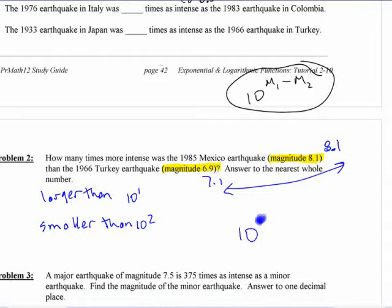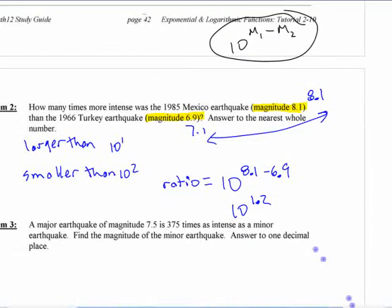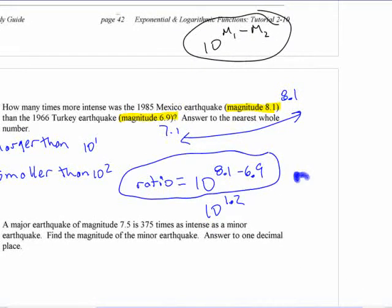It's 10 to the 8.1 minus 6.9. Or in other words, it's 10 to the 1.2. The ratio of the earthquakes is equal to that, right? The ratio of the two earthquakes is 10 to the 8.1 minus that. Now, you might have some grade 9 flashbacks here, but this I could write a different way. I could write it as the ratio is 10 to the 8.1 divided by 10 to the 6.9, right? Because in grade 9, you learned that dividing powers was the same as doing what? Subtracting those exponents, right? So you could write it either way. It doesn't matter.